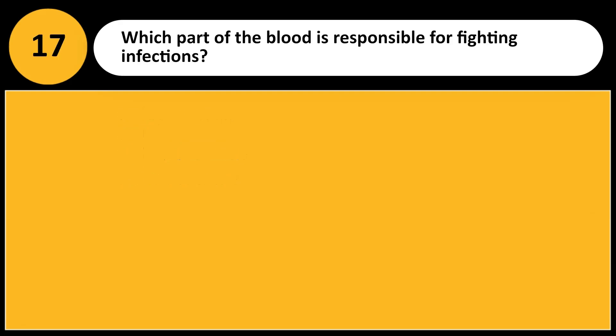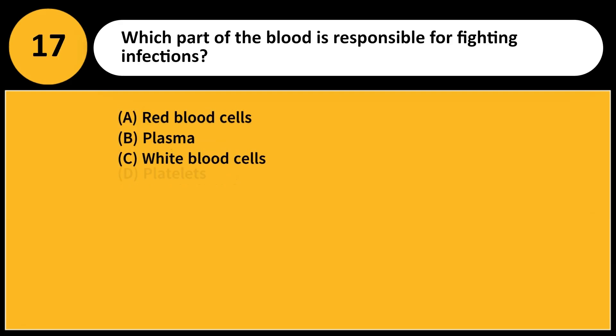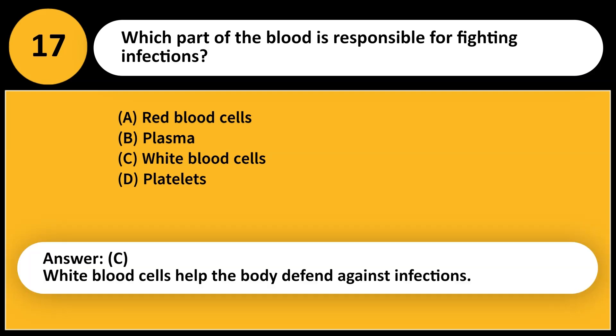Which part of the blood is responsible for fighting infections? A. Red blood cells. B. Plasma. C. White blood cells. D. Platelets. Answer: C. White blood cells help the body defend against infections.